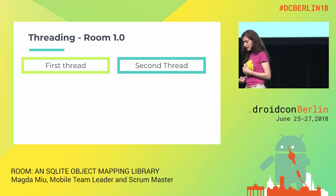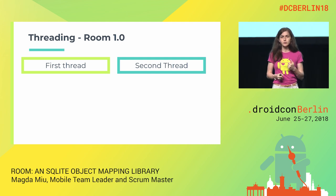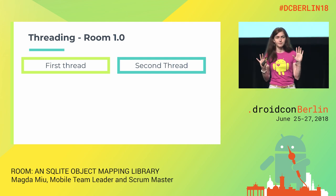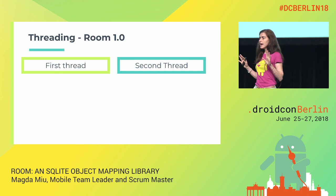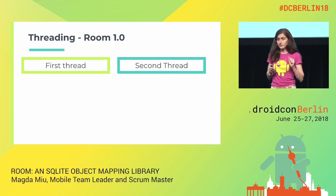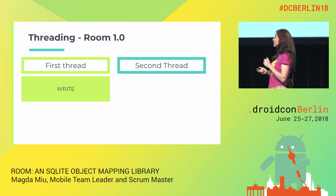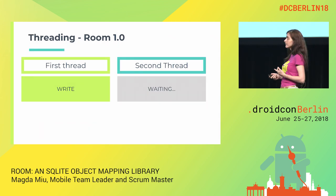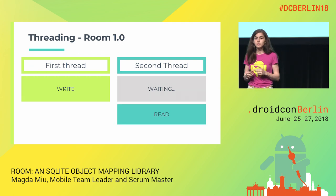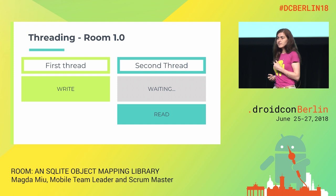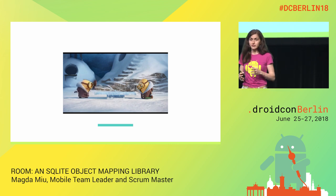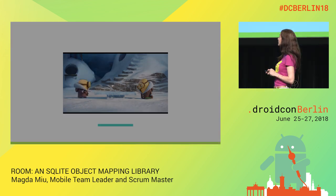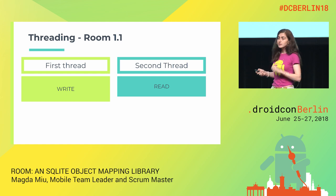An interesting threading note: in Room 1.0, if you have two threads — one writing and one reading — those operations could not happen simultaneously. The write thread had to finish before the read thread could proceed. In Room 1.1, this issue was solved: you can now run both read and write operations at the same time.